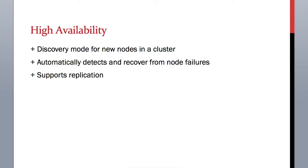If a replica node fails, then another replica node will be assigned. All this happens behind the scenes and users don't have to do any manual work. Moreover, Elasticsearch also offers a very easy way to add new nodes in place of failed nodes, with a replica or primary giving a plug-and-play kind of feature, which saves a lot of time for clients in maintaining their network.